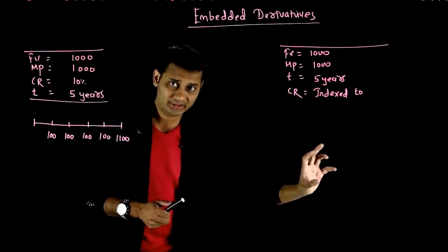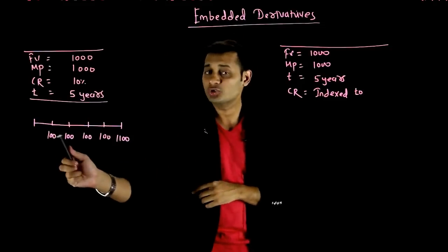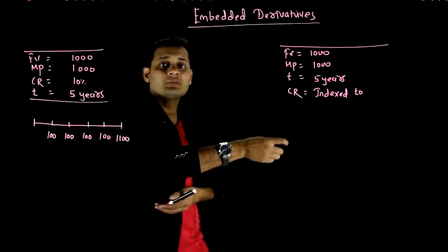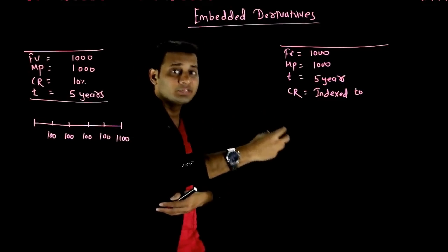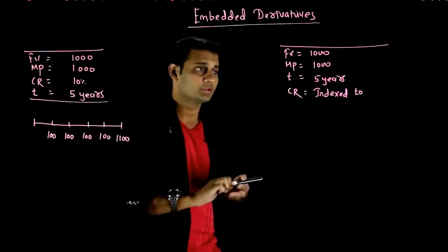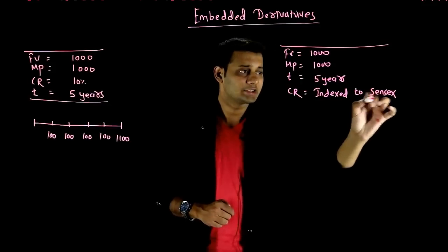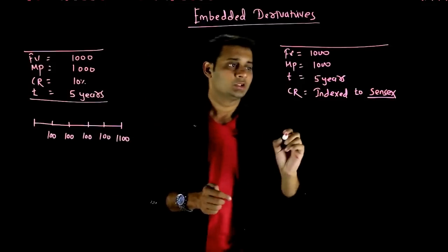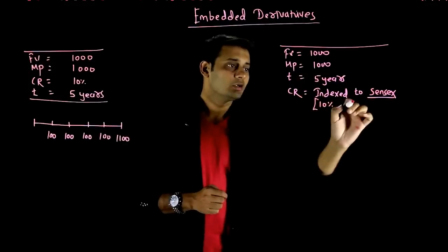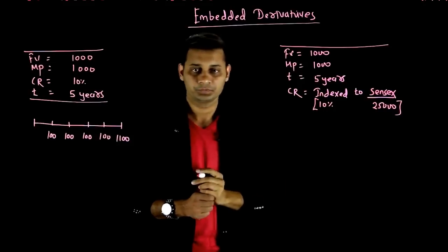If the coupon is dependent on that factor, then the coupon value will change every time. We will not have 100, 100, 100 fixed. The cash flows are indexed to some other factor which keeps on changing — for example, let's say the Sensex. The Sensex is continuously changing. So we have such a contract where the coupon rate is 10% indexed to Sensex, and the Sensex is at 25,000.